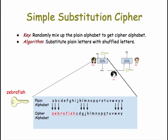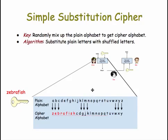Once you've created the cipher alphabet, encrypting and decrypting in a simple substitution cipher works the same as it did in Caesar cipher. For each letter in the plain text message, you replace it with the corresponding letter from the cipher alphabet. Of course, you have many more possible cipher alphabets, because the alphabets aren't merely a shifting of the original plain alphabet.